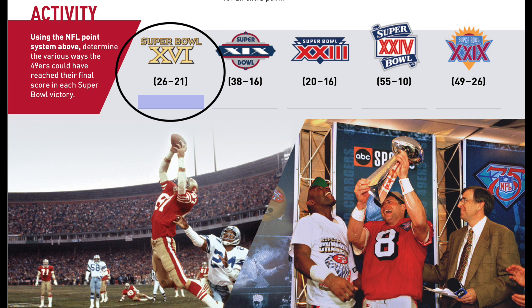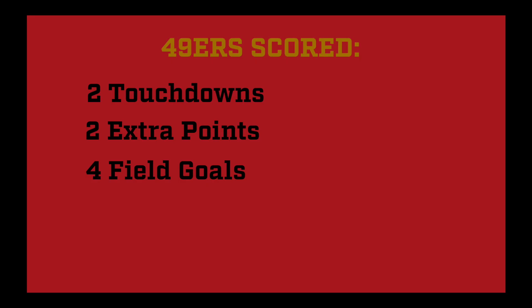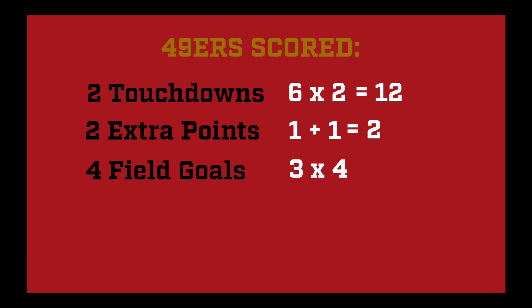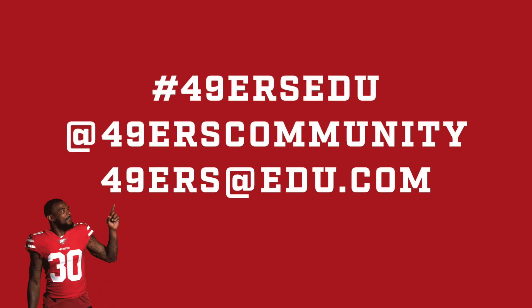Let's try the first one together. In Super Bowl 16, the 49ers won 26 to 21. The 49ers scored two touchdowns, two extra points, and four field goals. Do you remember how many points we get for each? Well, a touchdown is worth six points, so we times that by two to get twelve. Each extra point is worth one point and we got two of those, so one plus one equals two. A field goal is worth three points, so we're going to times that by four to get twelve. Now add all those together and see if we get the same final score. Is there more than one way to get the right answer? You tell me. Tag us in your photos and videos using @49erscommunity on Twitter or use the hashtag #49ersEDU to show us what you got.